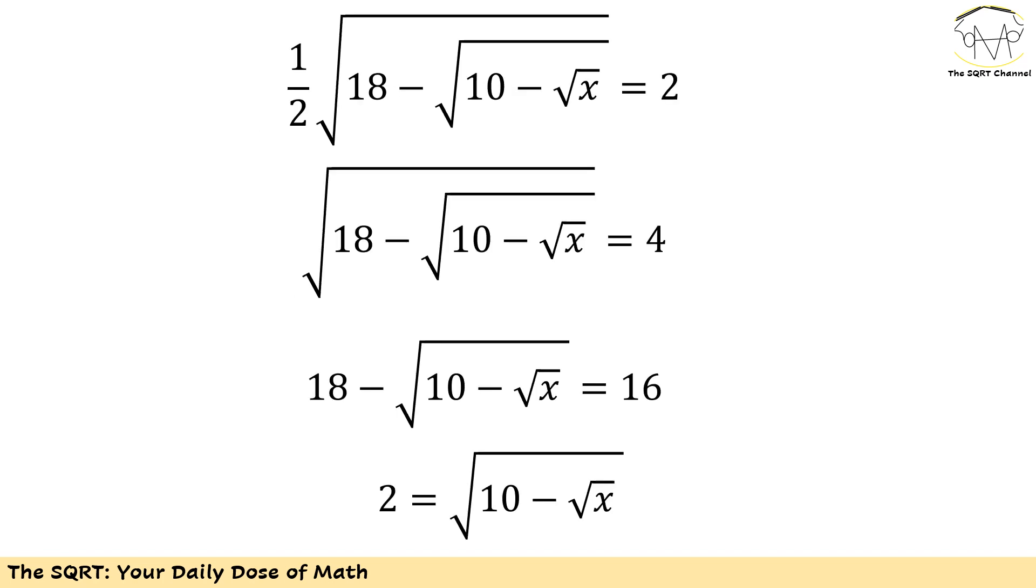As a result, I'm going to say that radical 18 minus radical 10 minus radical x needs to be 4 and then I will take power of 2 of both sides to have 18 minus radical 10 minus radical x is 4 to the power of 2 or 16.